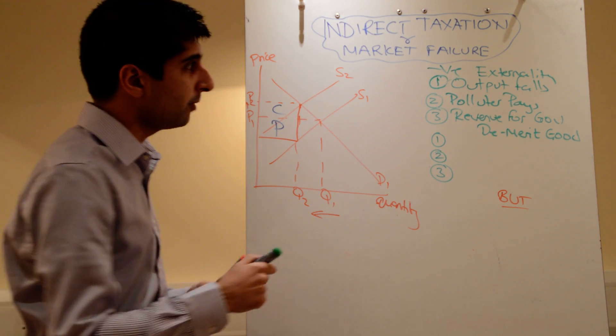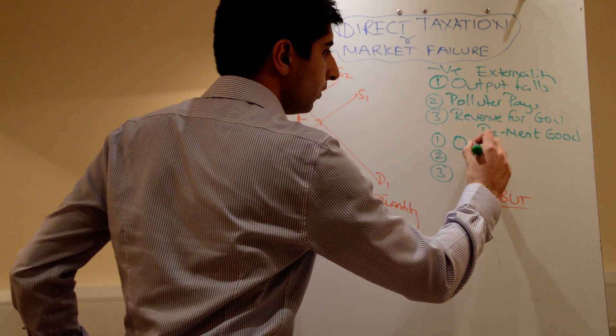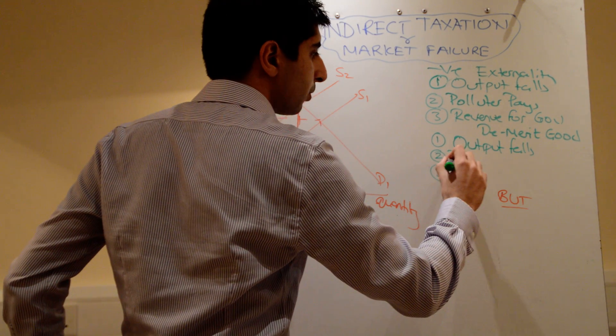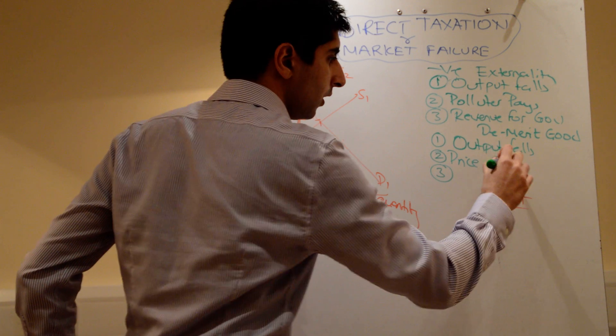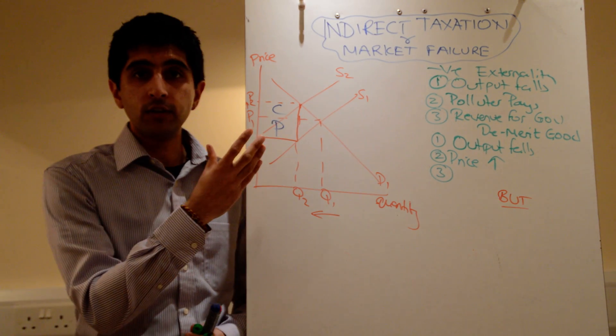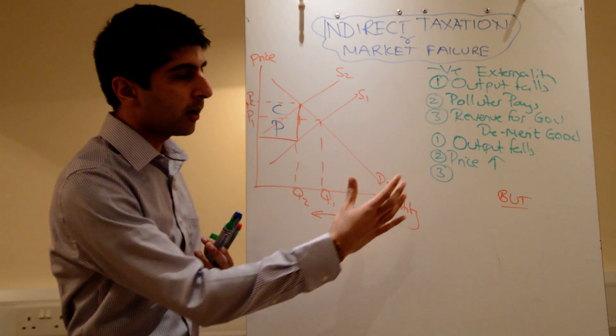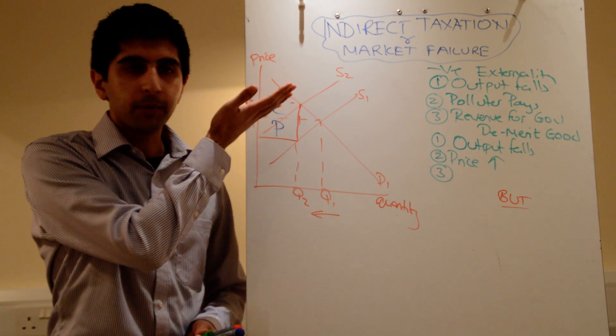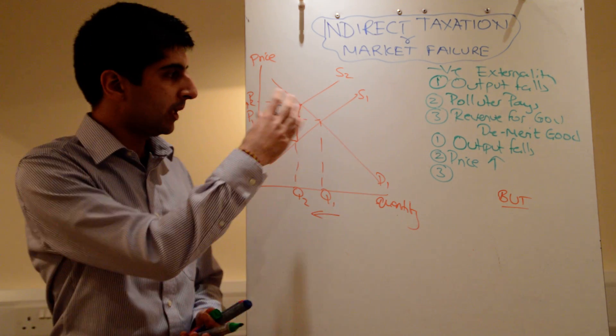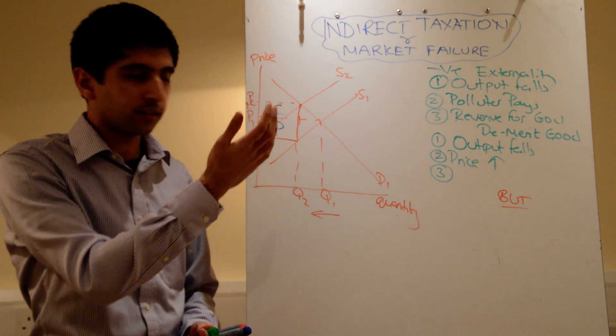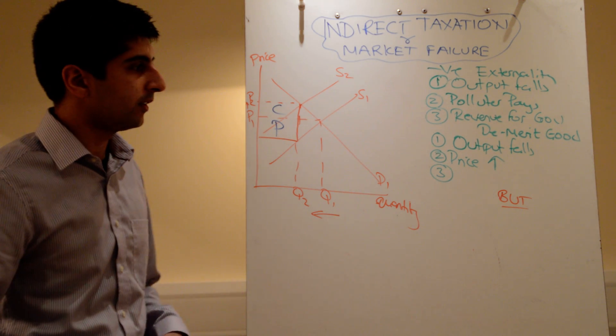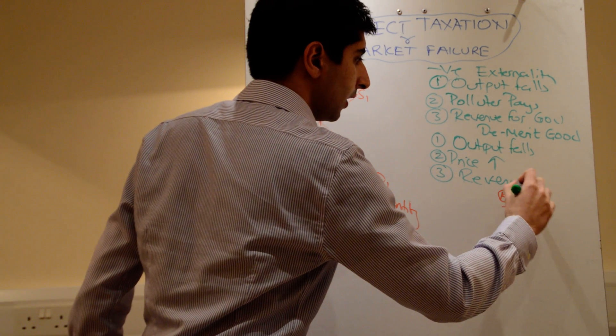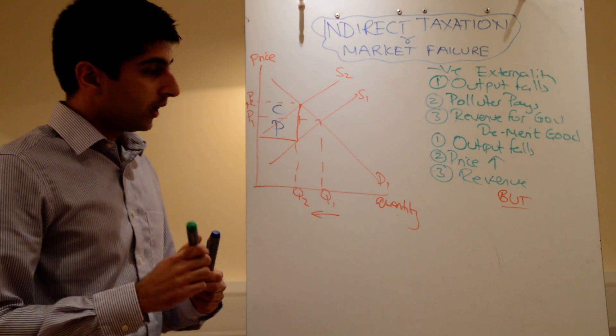What about for demerit goods? Same thing. Output falls towards the social optimum. The price increase might mean that consumers change their consumption habits. We know with demerit goods, there's an overconsumption of them. When the price suddenly goes up, that might limit consumption. It might mean consumers move elsewhere and consume other things, which is good, which is exactly what the point is here. And at the same time, you've got the revenue argument again. Revenue for government as well.